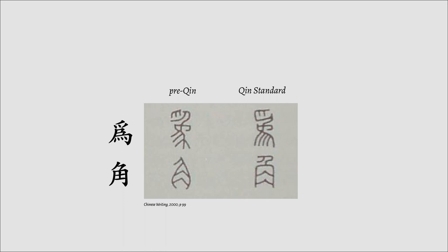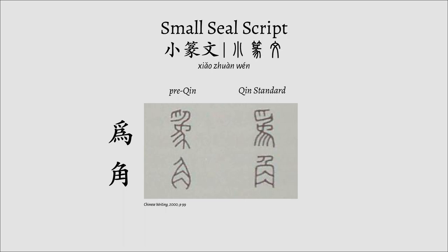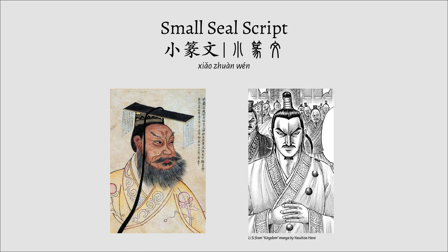This became the standard which the Qin dynasty pushed, replacing the various other scripts that had been developed, and is called the Small Seal Script in English, due to its usage on seals and stamps in the modern day. In Mandarin Chinese, it's called Xiao Zhuan Wen. Originally, this script form is attributed to the Qin Emperor's advisor, Li Si. However, it's likely that Li Si compiled together various innovations and simplifications already present to create the new standard we call Small Seal Script.